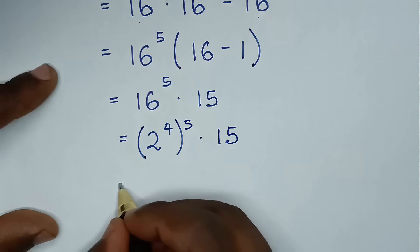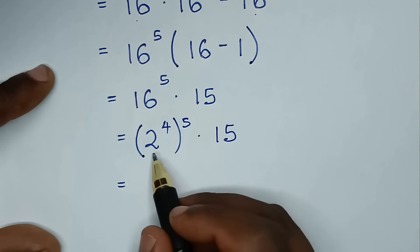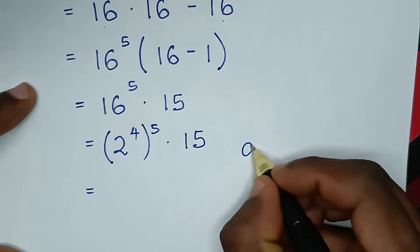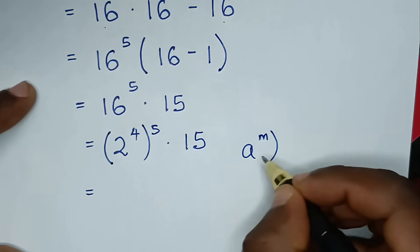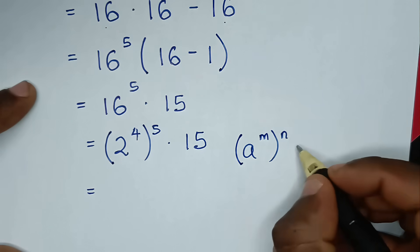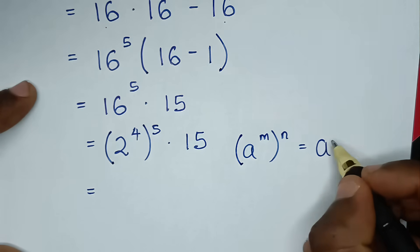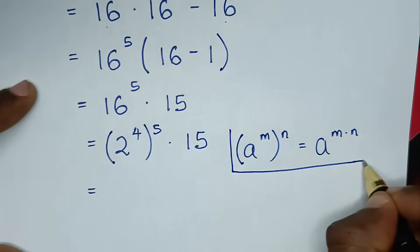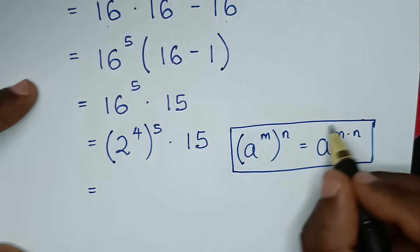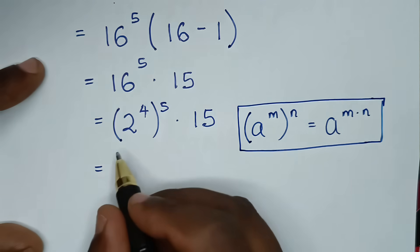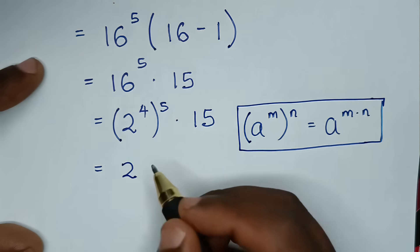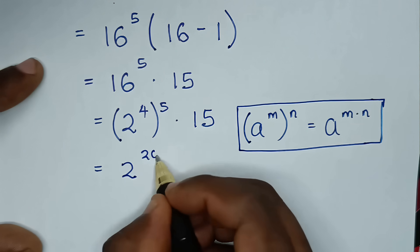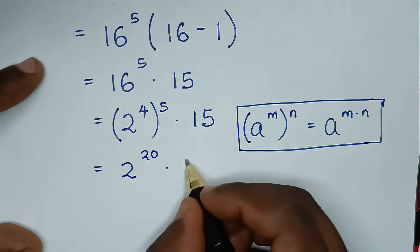Then in the next step, this part is in the form of the rule a power of m bracket power of n, which is equal to a power of m times n. So from this rule we apply this form. Then it will be 2, and we multiply the powers, so it will be 4 times 5, which is 20.